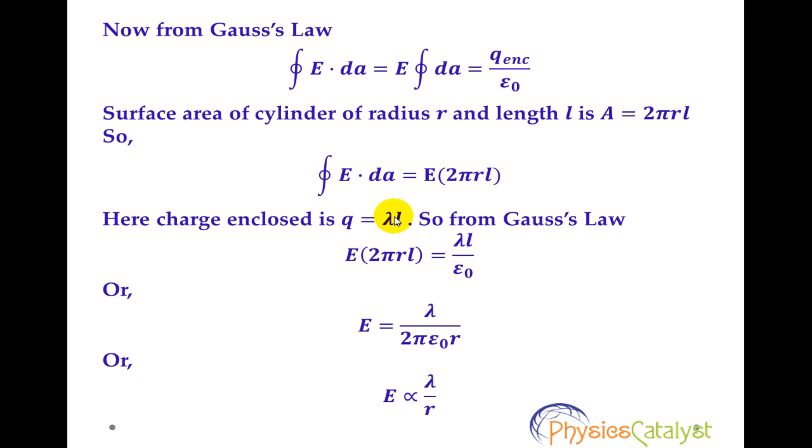Now charge enclosed in cylinder equals linear charge density times length L of the cylinder. So charge enclosed equals lambda L. From Gauss's law, E times 2 pi R L equals lambda L over epsilon naught.